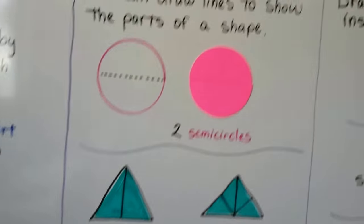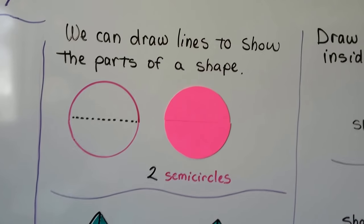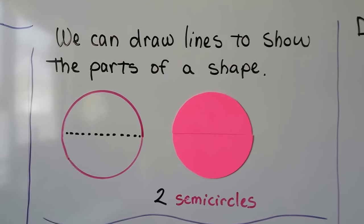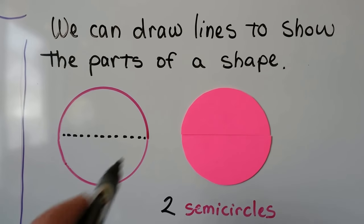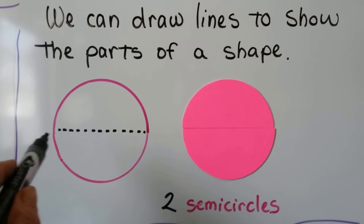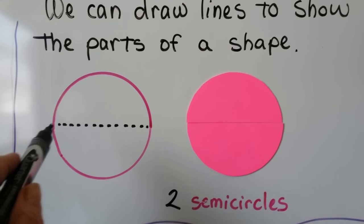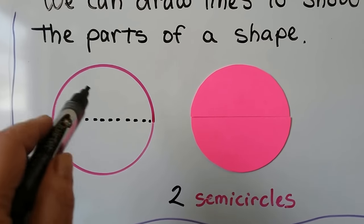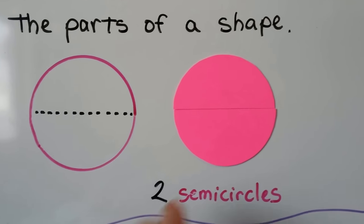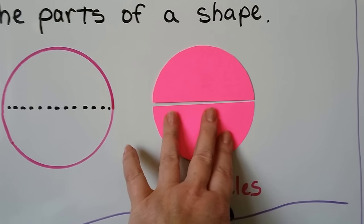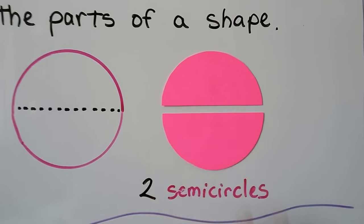We can draw lines to show the parts of a shape. We draw a line through the middle of a circle and cut it in half. We have two semi-circles.